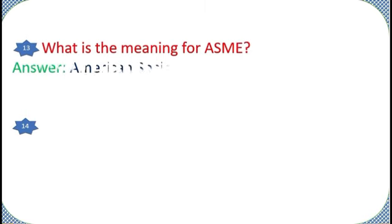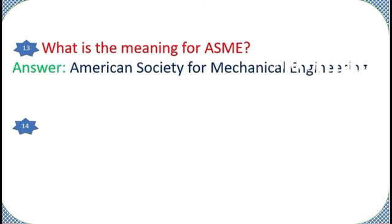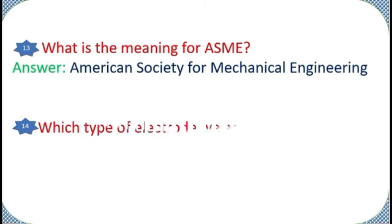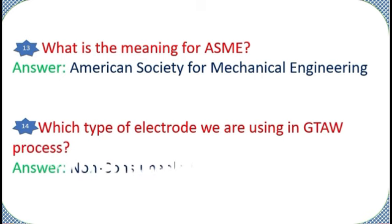What is the meaning for ASME? Answer: American Society for Mechanical Engineering. Which type of electrode we are using in GTAW process? Answer: Non-consumable tungsten electrode.